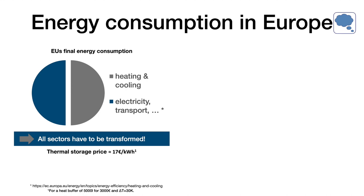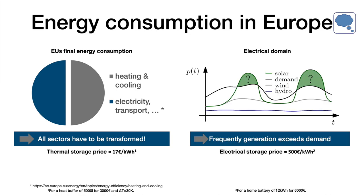If you look at the EU's final energy consumption, around half is used for heating and cooling of buildings or industry. So if you want to have 100% renewable production, we also need to consider this large share of final energy consumption. The nice thing about the thermal part is that thermal storages are much cheaper than electrical storages — around 7 euros per kilowatt hour versus several hundred euros per kilowatt hour in the electrical domain.